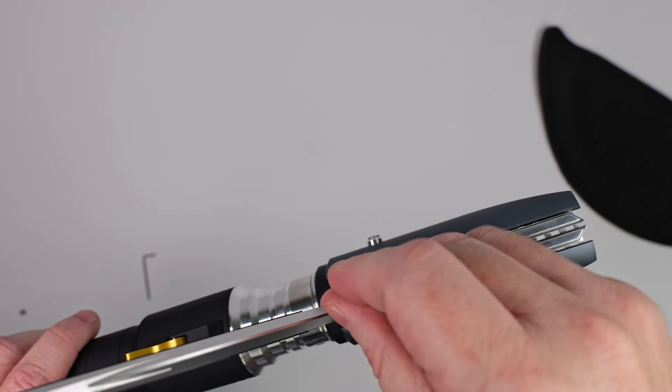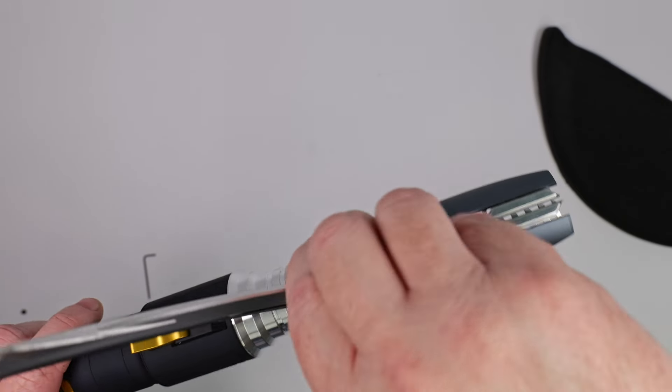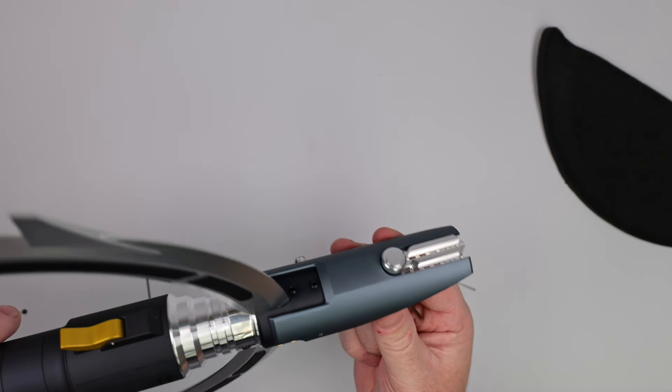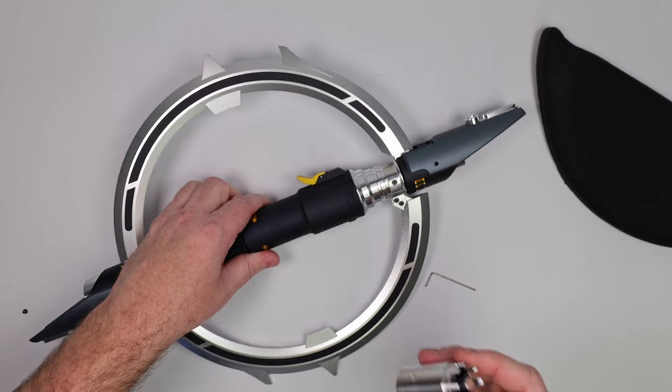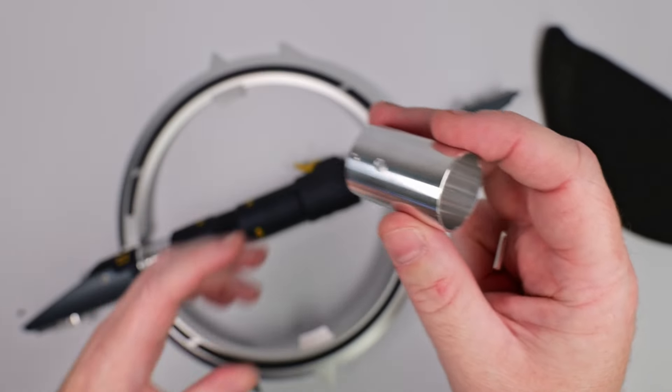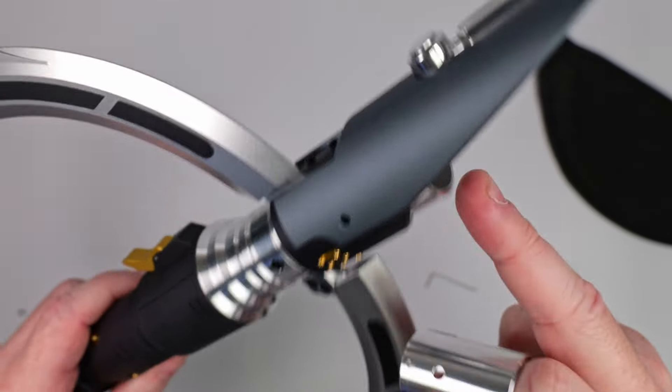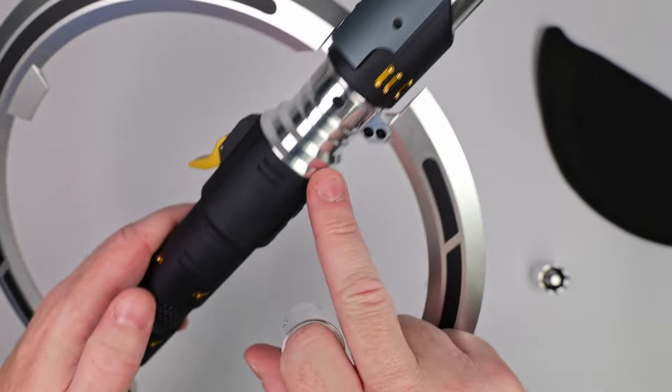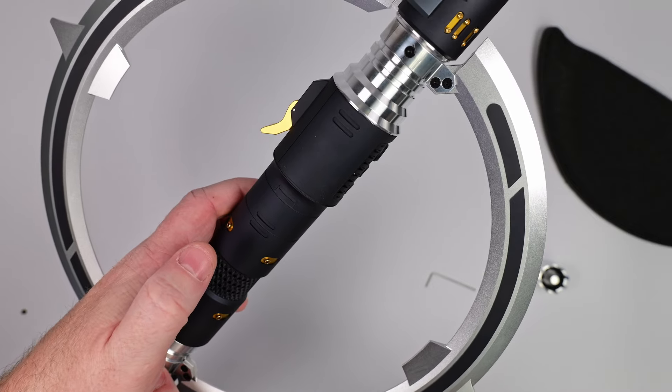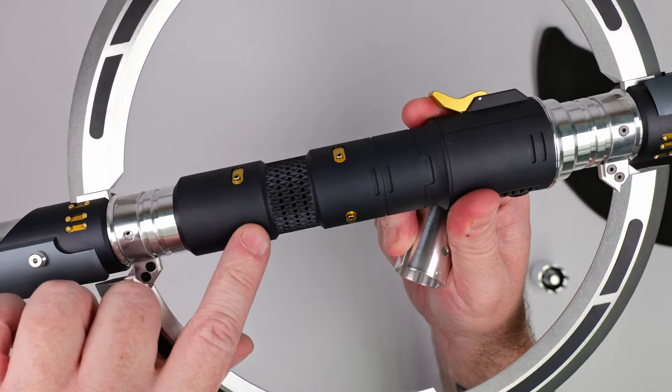So again, to maintain the same consistency all the way through the hilt, we added this. You get your blade plug, and then you've got the sleeve. You pull the sleeve out, you pull the blade plug out, and then it's consistent all the way through for your chassis. You've got the hidden sound venting here.